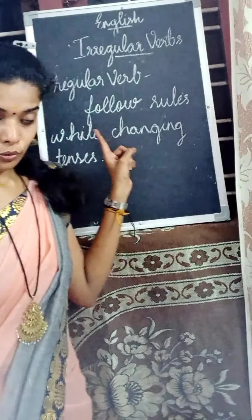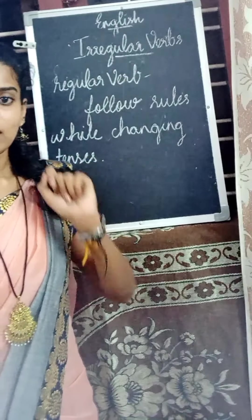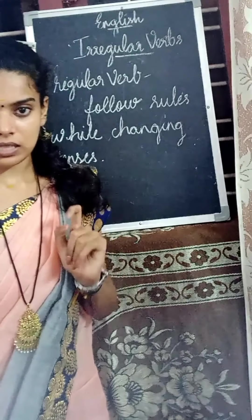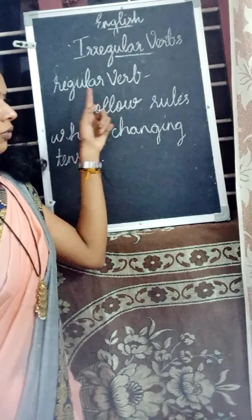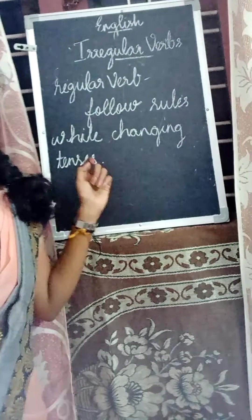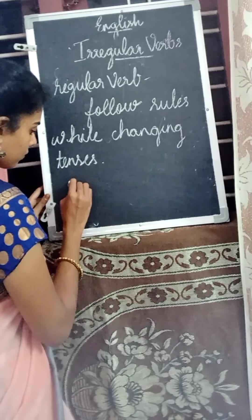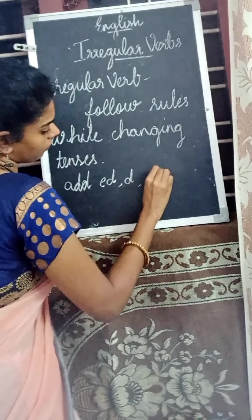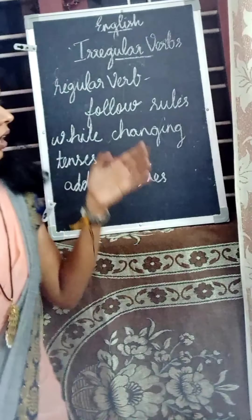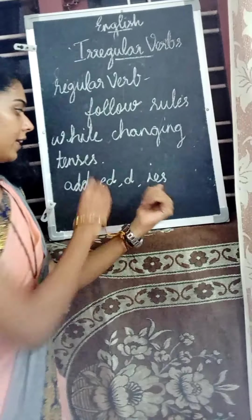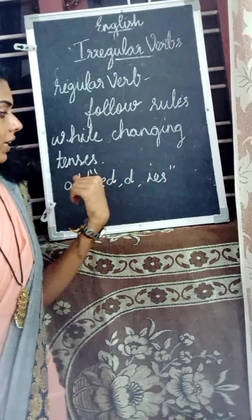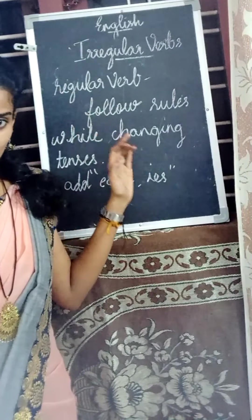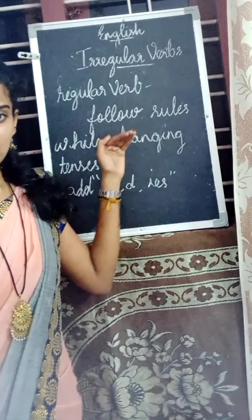In regular verbs, we follow the rules when we change the verb into another tense — that is, past, present, or future tense. Regular verbs follow rules while changing their tenses. Regular verbs are verbs that follow the rules in grammar while changing their tense. For example, in regular verbs, we add 'ed', 'd', and 'ies' when we change the verb into past tense.